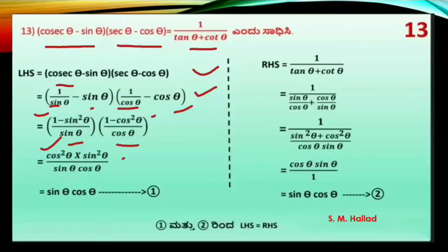1 minus cos θ cancels with 1 minus cos θ in the denominator. Similarly, 1 minus sin θ cancels, leaving cos θ.